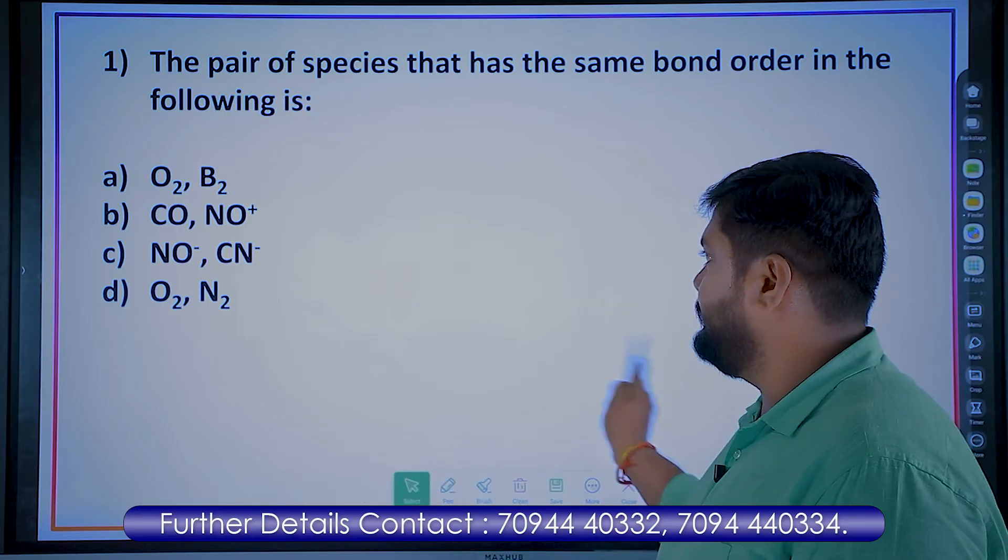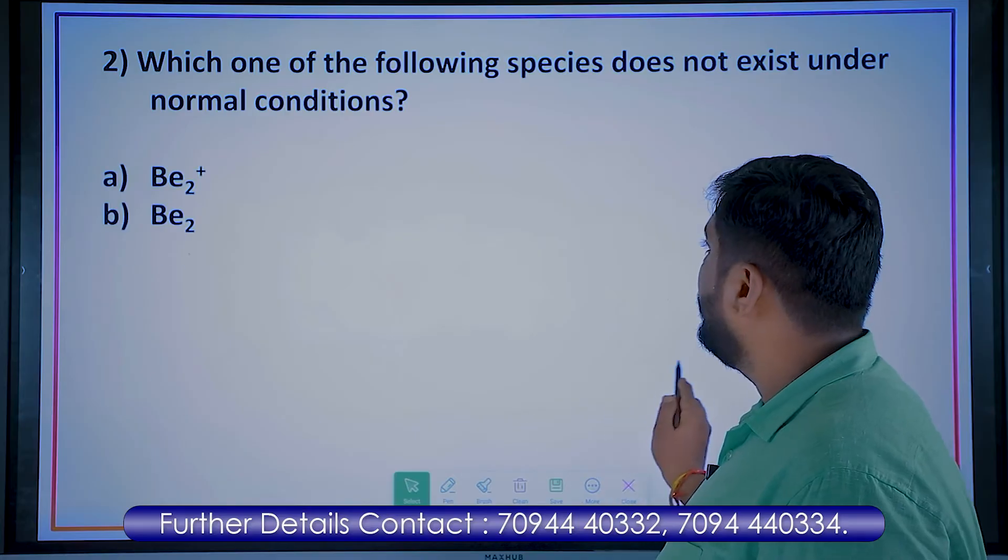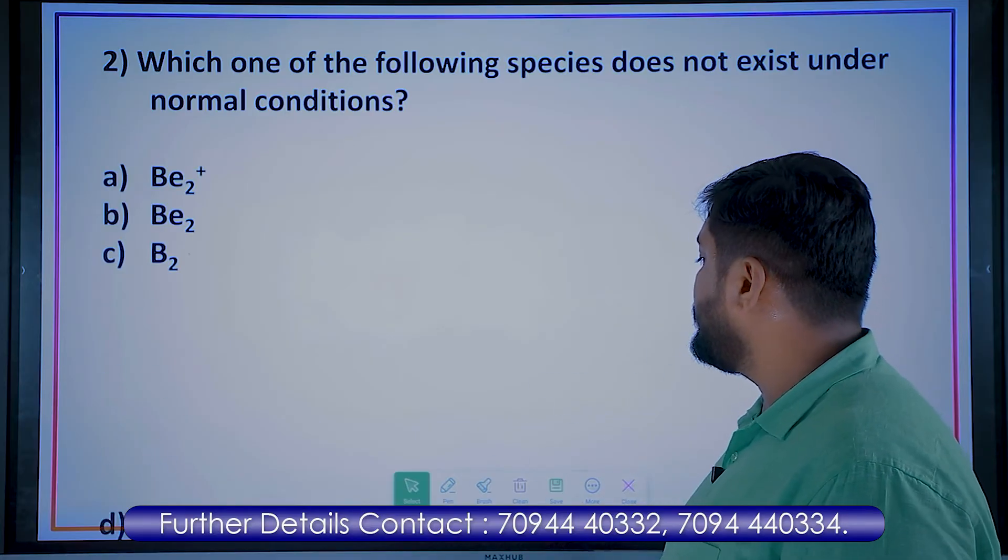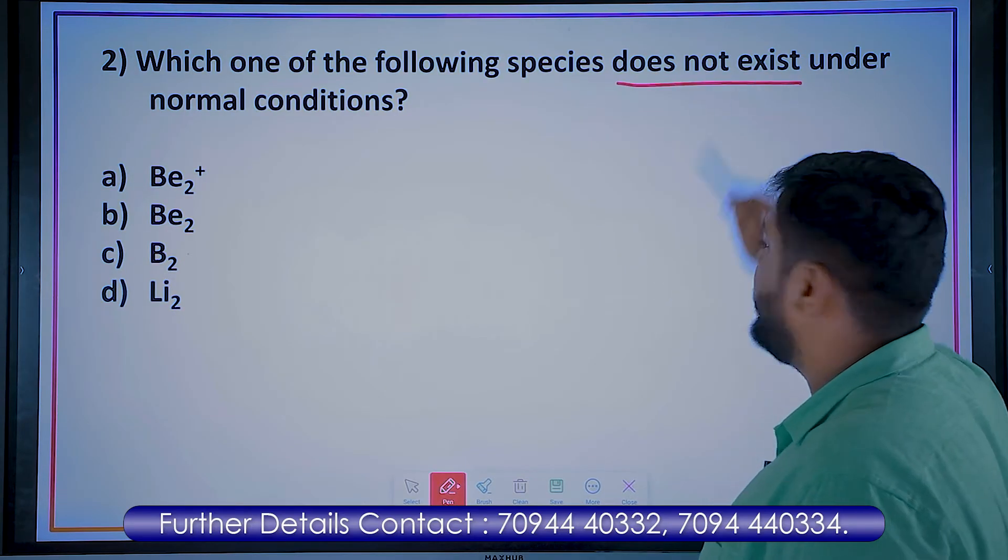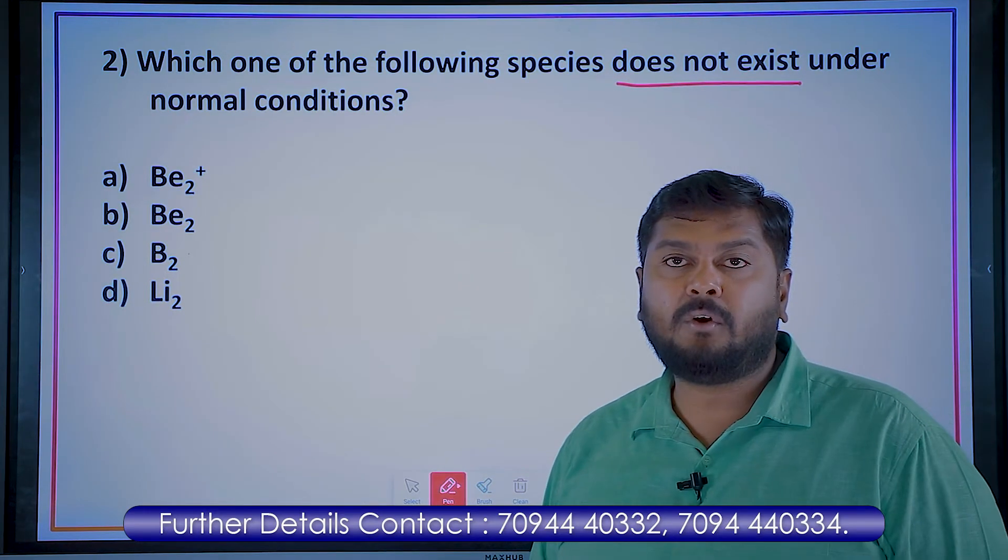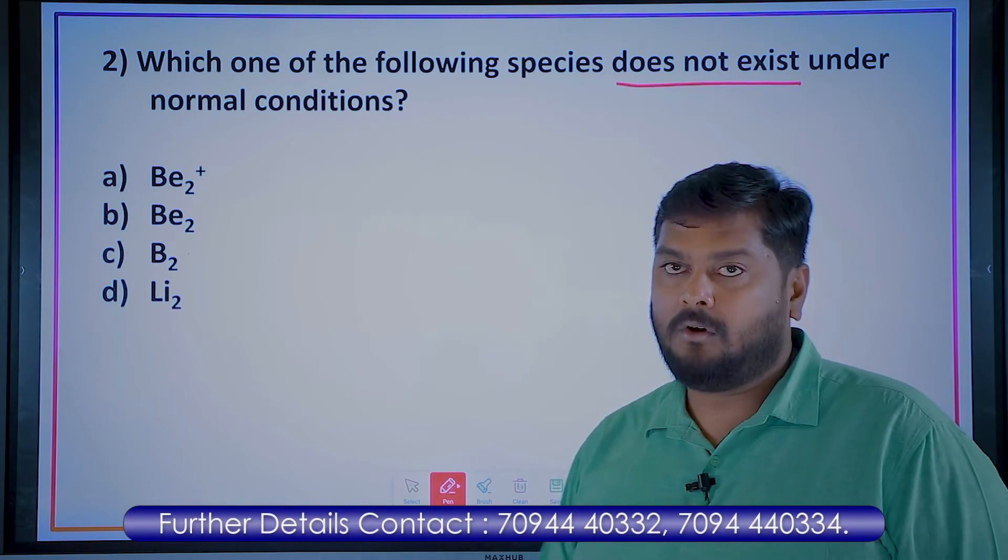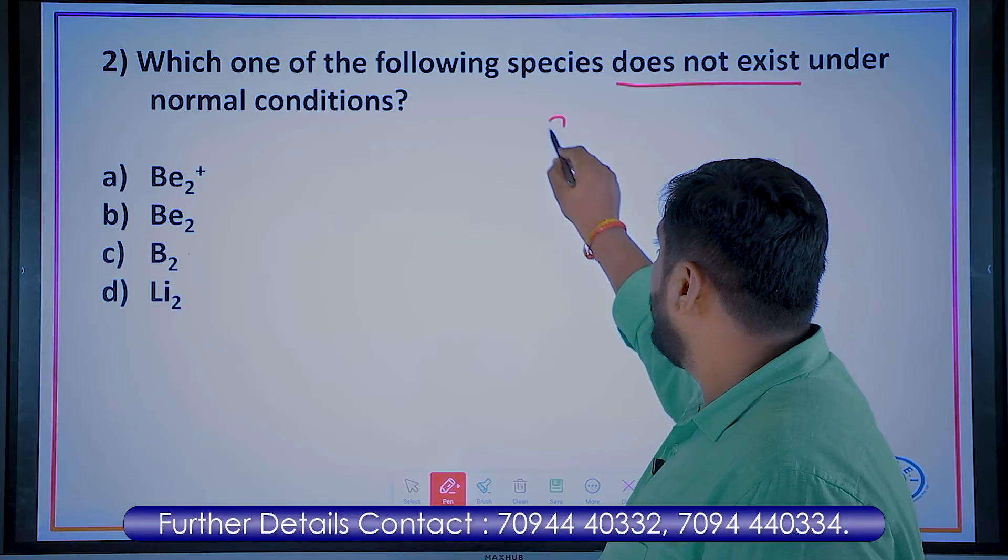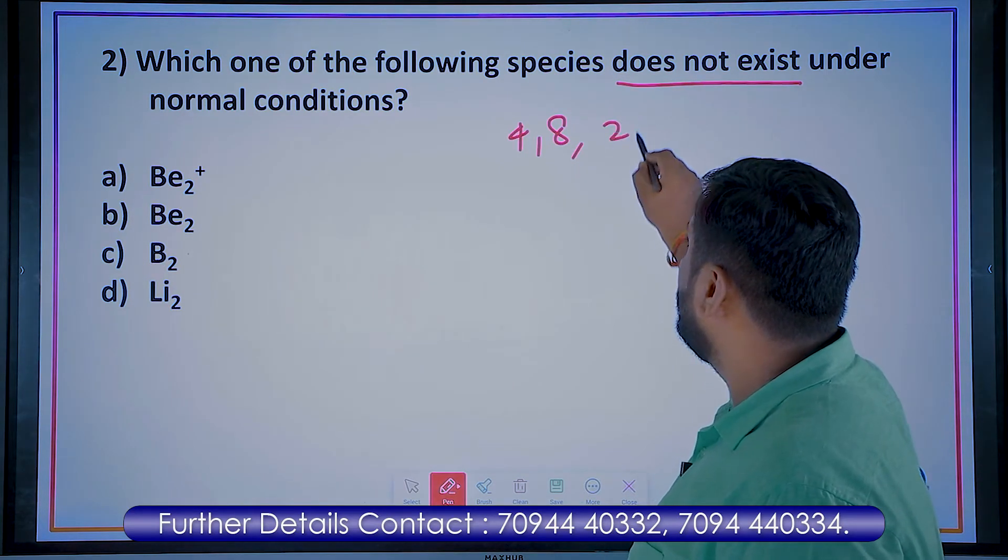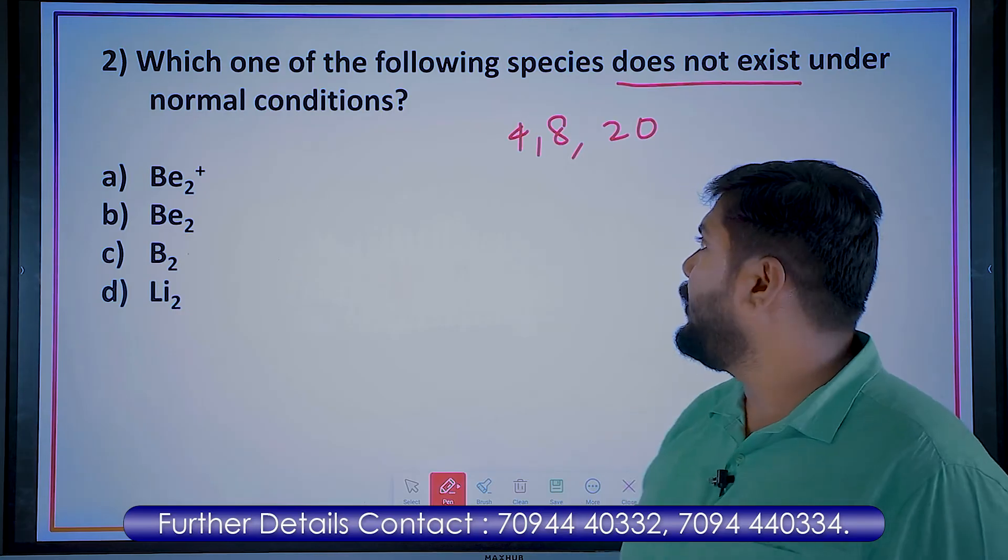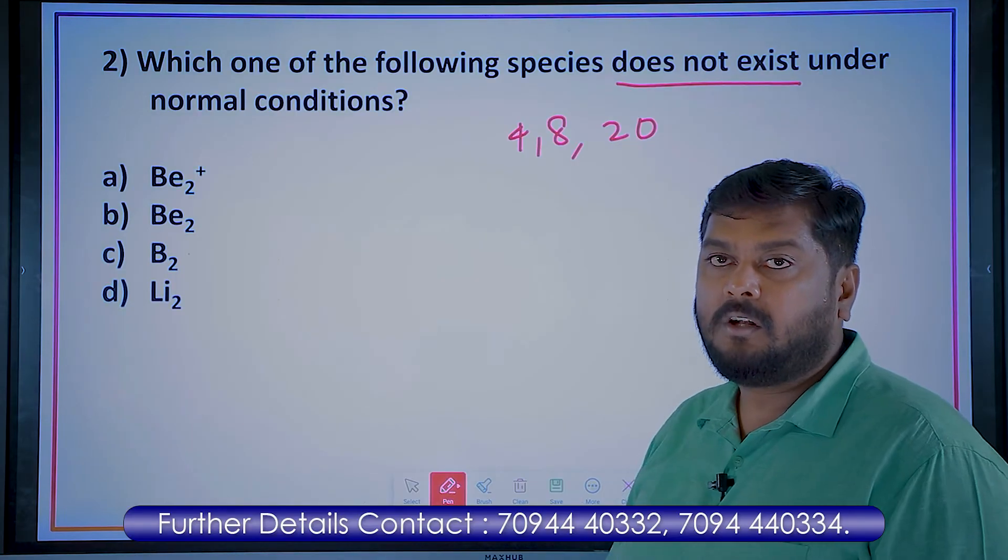Next question. See this question, we are asked to find which of the following species does not exist. Already we know, which does not exist? The bond order, the molecule with 0 bond order. 0 bond order? Molecules with 8 electrons, 4 electrons, and 20 electrons. So molecules with 4 electrons, 8 electrons, and 20 electrons have bond order 0.